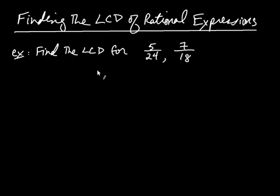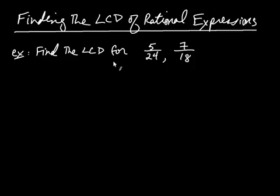We're going to talk about the very important business of finding the LCD — that is, the least common denominator of rational expressions. A rational expression is basically just a fancy fraction — a fraction that has polynomials in the numerator and denominator. We're first going to find the LCD for two regular fractions and then see how that technique carries over to rational expressions.